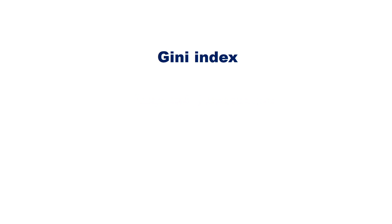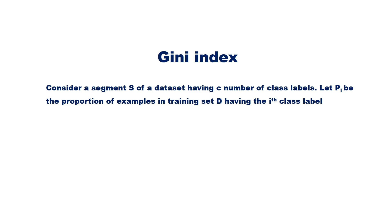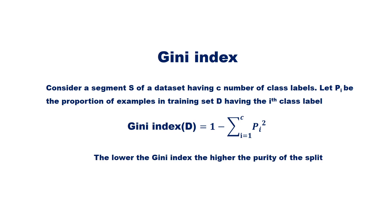Instead of measuring purity, mathematically we measure the impurity of a node. The impurity specifies how mixed the resulting subsets are. A common impurity measure for determining the best split is the Gini index. Consider a segment D of a dataset having C class labels. Let Pi be the proportion of examples in D having the ith class label. The Gini index of D is given by: 1 minus the summation over i = 1 to C of Pi squared. The lower the Gini index, the higher the purity, so the decision tree selects the split that minimizes the Gini index.